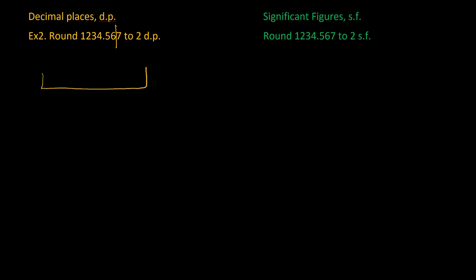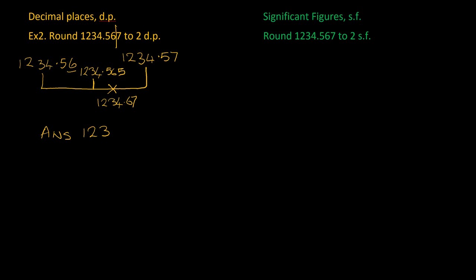We draw our diagram. At the start we have 1234.56, and we add one to just that last part to get the other end. The middle will be 1234.565. We mark with a cross where 1234.567 is — which would be just past the middle. Asking which end it's closest to, this time it's closest to 1234.57.